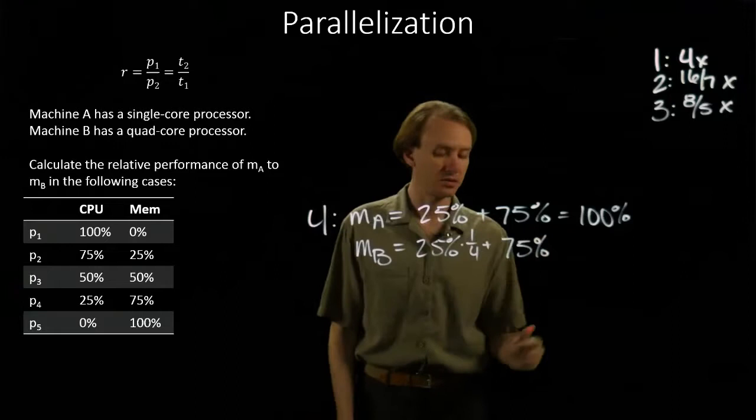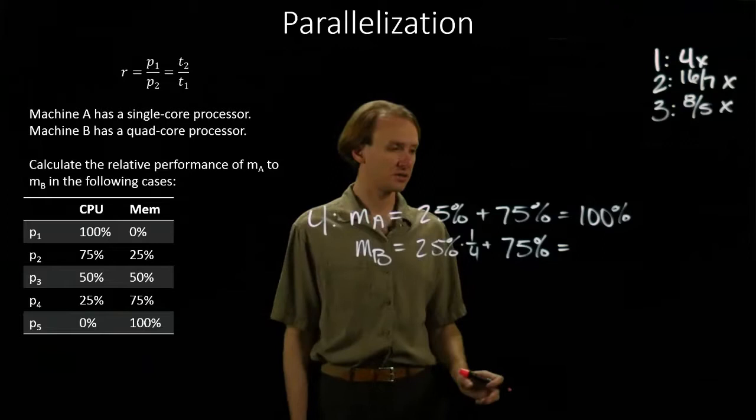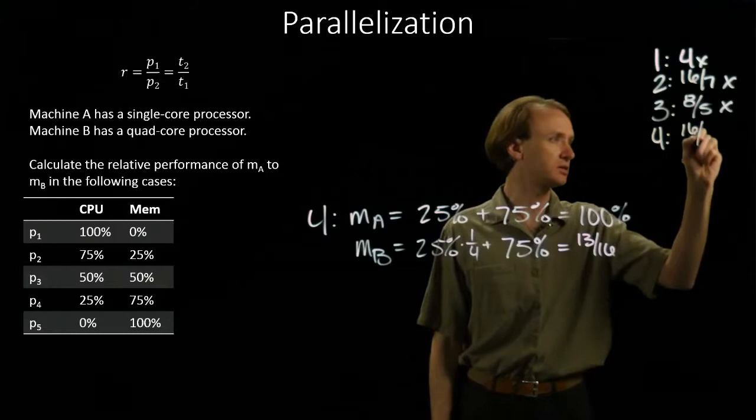The quad-core processor doesn't affect the execution time of the memory instructions. So I add this together, I've got three-fourths and one-sixteenth, which gives me thirteen-sixteenths. Or I can say that Machine B is sixteen-thirteenths times faster than Machine A.